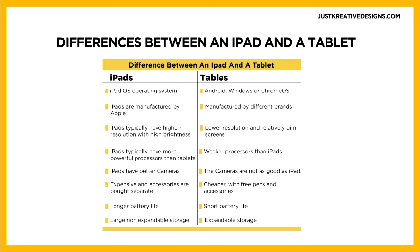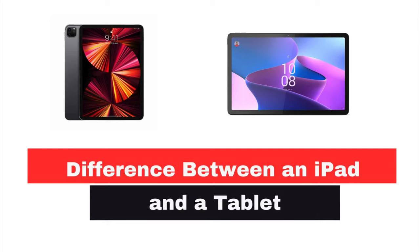Detailed spec comparisons: when comparing iPads to other tablets, it becomes evident that Apple's devices excel in several key areas. The latest iPad Pro showcases a stunning Liquid Retina display equipped with ProMotion technology, ensuring smooth visuals and responsiveness, complemented by the powerful A12Z Bionic chip that enhances performance across applications. Meanwhile, the iPad Air boasts a 10.9-inch Liquid Retina display and the A14 Bionic chip, making it a versatile companion for both productivity tasks and entertainment. These specifications highlight Apple's commitment to delivering high-resolution screens, robust processors, and extended battery life, setting iPads apart in the competitive tablet landscape.